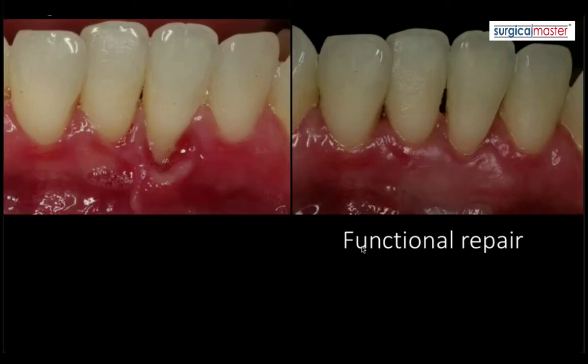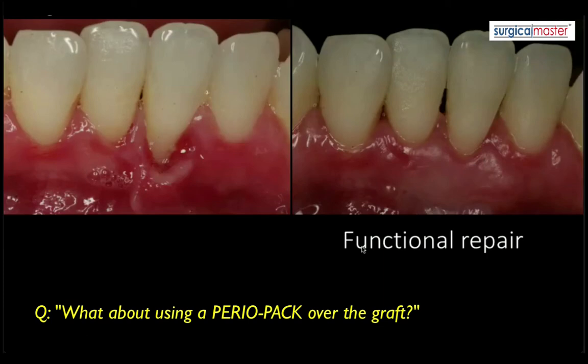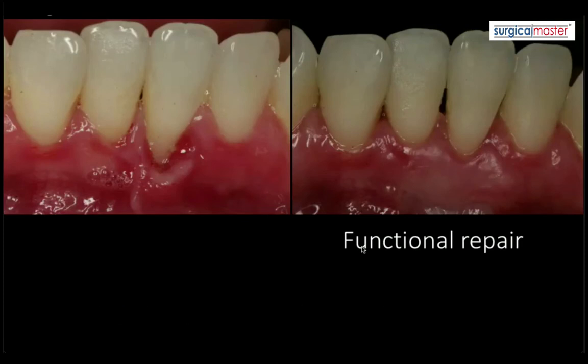Regarding the question about using a periopac over the graft: I don't use one — it's not necessary for success. The problems with a periodontal dressing are that it's very hard to retain, you have to wedge it between the teeth, and when you remove it a week later it smells terrible because there's no salivary flow and bacteria are festering right on top of the graft. I don't see any need for it.